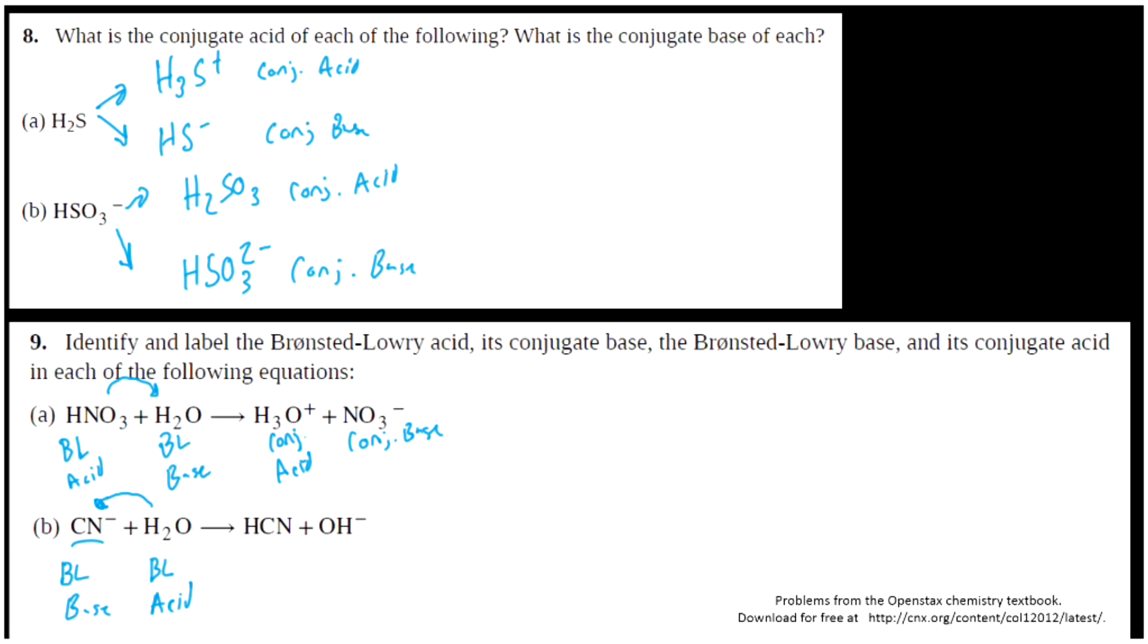And that means that CN-, once it gains the hydrogen, is going to give me a conjugate acid. Notice it also has the higher charge. Its charge is zero compared to negative one. Lastly, OH-, which came from the Bronsted-Lowry acid, is the conjugate base.